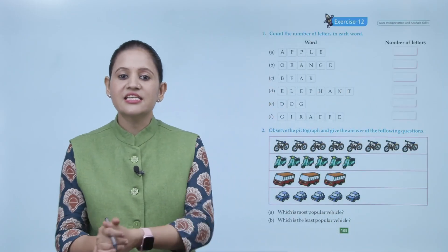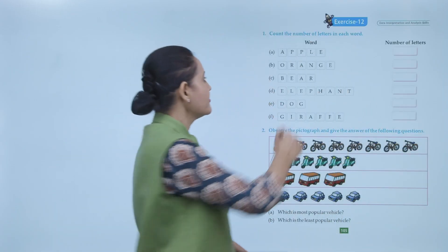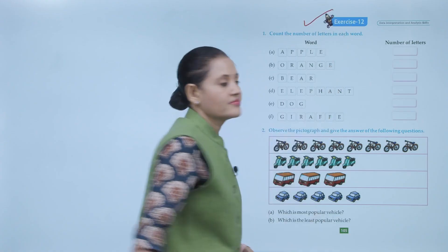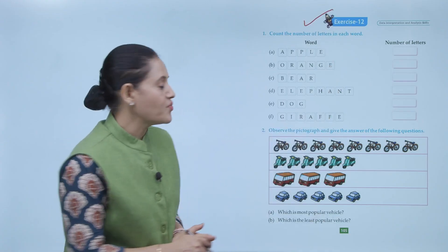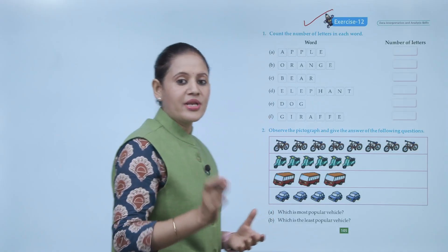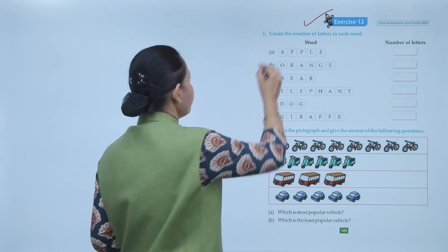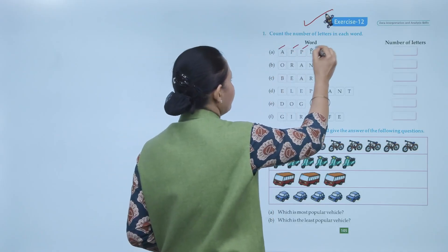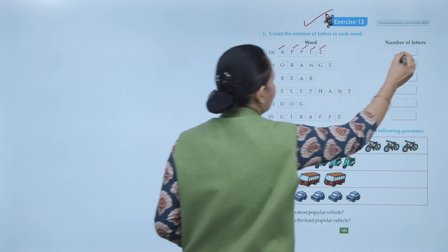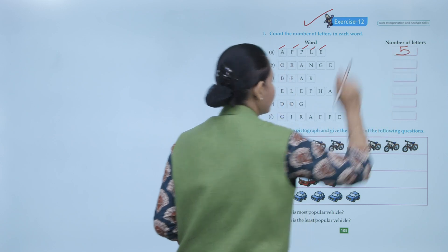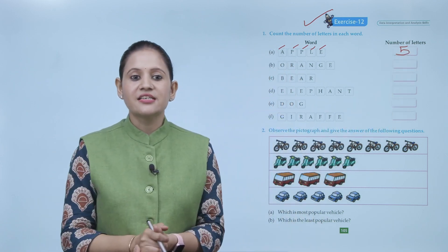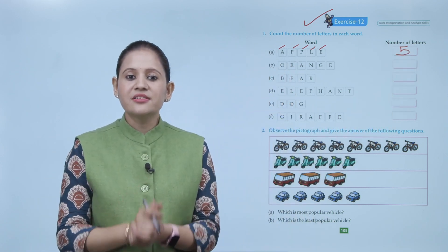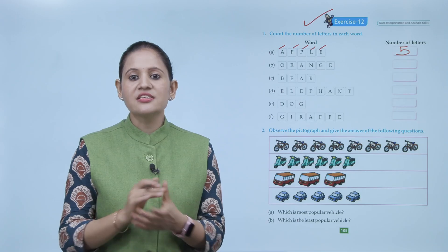Next is Exercise 12. Count the number of letters in each word. The first word is 'apple', so how many letters are there? 1, 2, 3, 4, 5 — so write here 5 letters. Next, observe the pictograph given and answer the following questions.